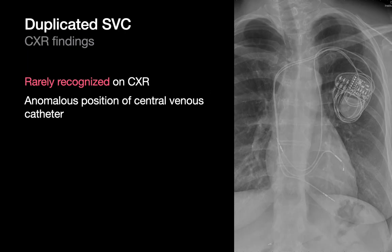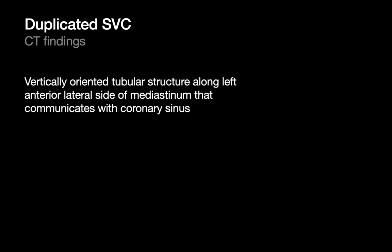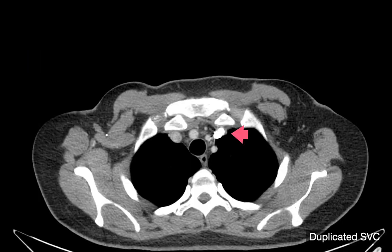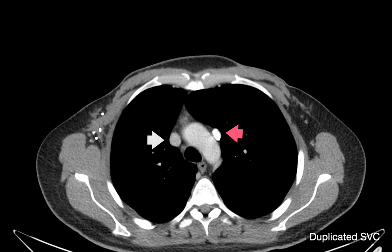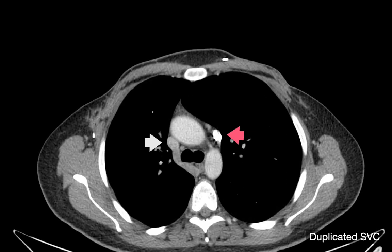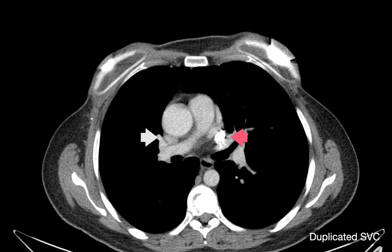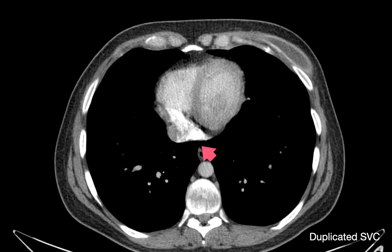Duplicated SVCs are an anatomic variant that's usually not picked up on CT unless a catheter or other central venous device happens to be coursing within a left-sided SVC. On this image, you can see two cardiac conduction leads reaching the heart via the right SVC and one via the left SVC. On CT, you'll recognize a duplicated SVC when you're scrolling and see a tubular structure in the left mediastinum that connects with the coronary sinus. Watch how the contrast column in the left SVC drains into the coronary sinus and enters the right atrium.